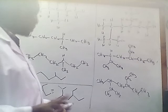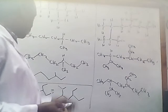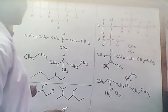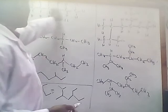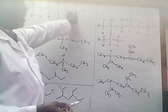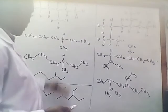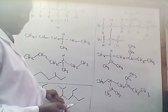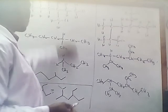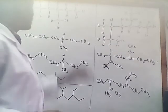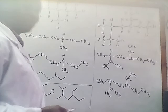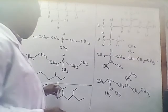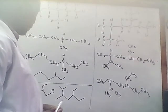So we'll just stop there. This was to show you how, if you are given the Lewis structure, you can convert it into the bond-line structure, and how the bond-line structure can be converted back into the two-dimensional Lewis structure. We will proceed after that.